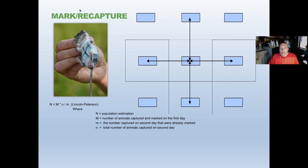We can use a process called mark and recapture, where we capture an animal and put a mark on it — in this case a permanent marker X on the belly of a deer mouse. We release it, and if we capture it again in a trap we know we've already caught that animal once. This is important when using a formula called the Lincoln-Peterson index, which allows us to estimate population sizes using live traps for any animal we can trap and mark.